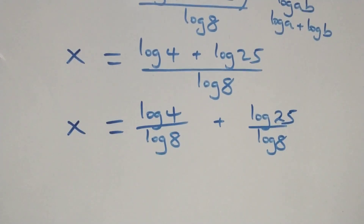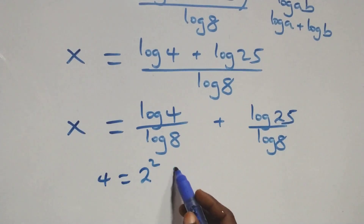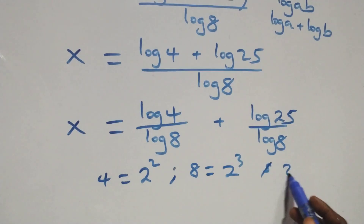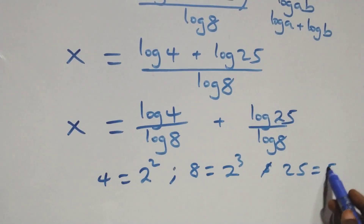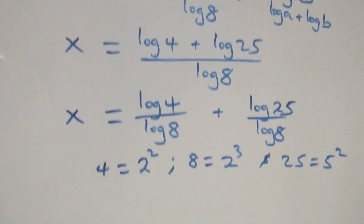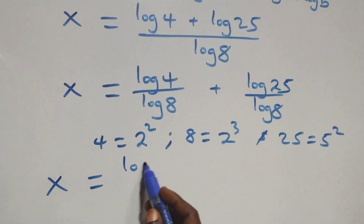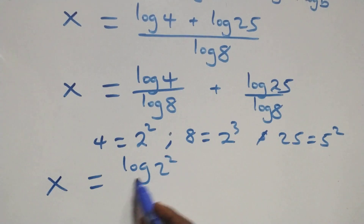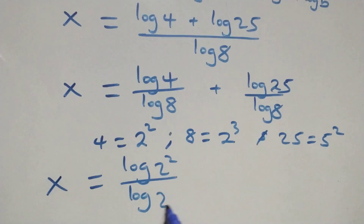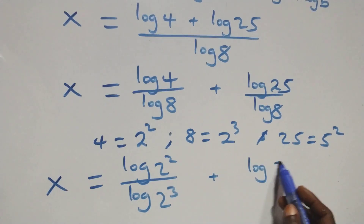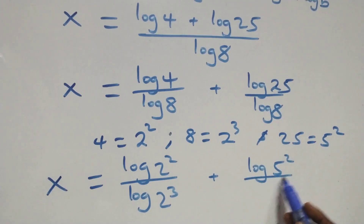We can express 4 as 2 times 2, that's 2 squared; 8 as 2 times 2 times 2, that's 2 cubed; and 25 as 5 times 5, that's 5 squared. So what we have becomes x equals log(2 squared) over log(2 cubed) plus log(5 squared) over log(2 cubed).